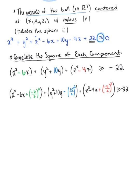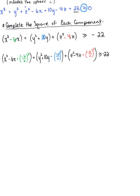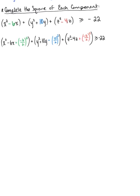And this is going to be greater than or equal to negative 22. Now we want to be sure that we add whatever we did to the left-hand side of our equation, we also need to add to the right-hand side. So we're going to need to add minus 3 squared, which will give us plus 9. We're going to need to add positive 5 squared, which is plus 25. And last but not least, we're going to need to add minus 2 squared, which means we need to add 4 to both sides.